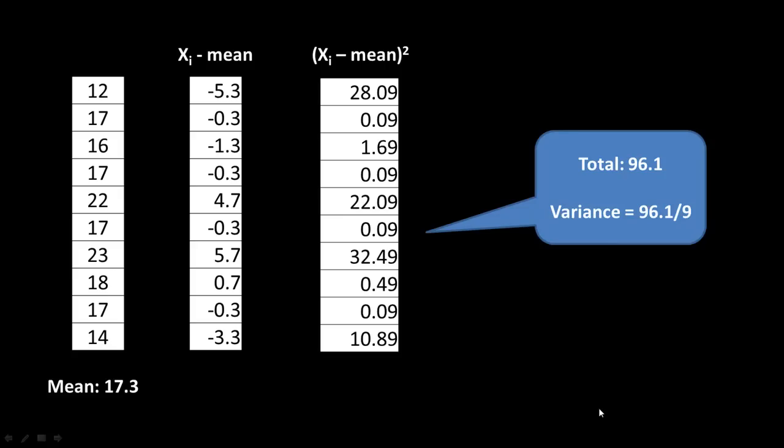Now, you may say, why divide by n-1? Why not divide by n? The explanation in statistics is, when you have a sample, the variance in the sample will underestimate the variance in the actual population.